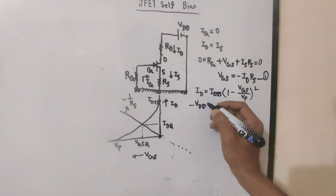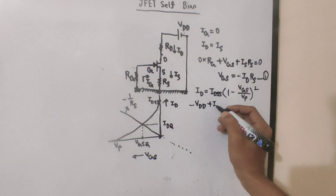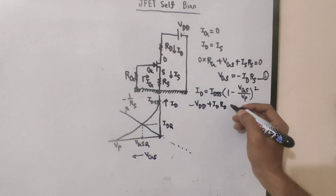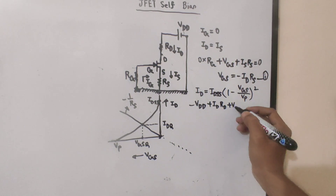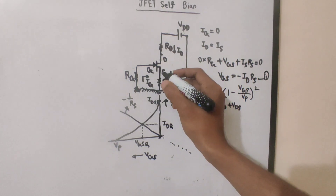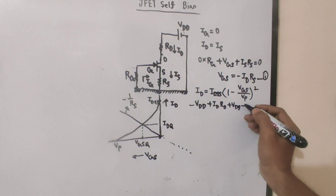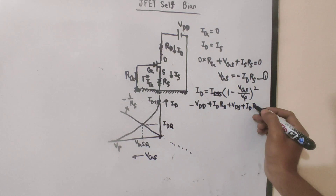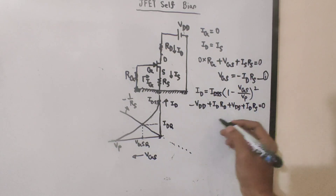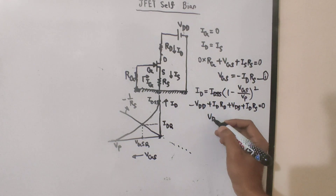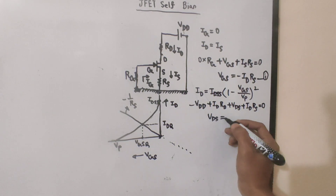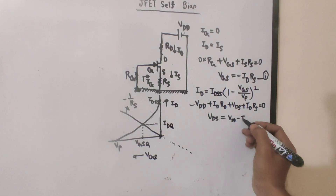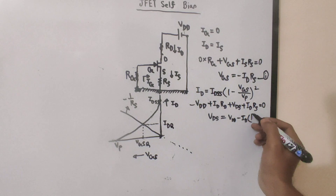Applying KVL to the drain-source loop: VDD minus ID times RD minus VDS minus IS times RS equals 0. Therefore VDS equals VDD minus ID times (RD plus RS).